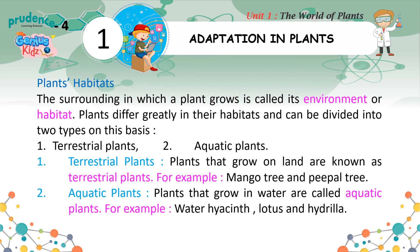Plants Habitats: The surrounding in which a plant grows is called its environment or habitat. Plants differ greatly in their habitats and can be divided into two types on this basis: 1. Terrestrial Plants — plants that grow on land, for example, mango tree and peepal tree.